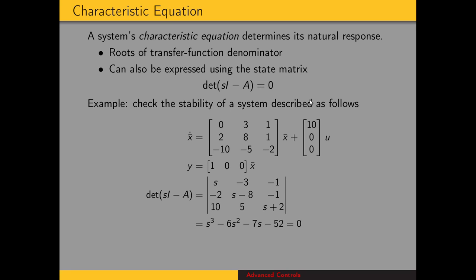For example, let's use this to check the stability of a system with this state space representation. Using the state matrix A, we compute the determinant of (sI - A), which gives a third order polynomial. Setting that equal to zero gives the characteristic equation. To check stability, we see if the real parts of the roots are less than zero. The roots are -7.76 and the pair -0.882 ± j2.43. Since one root is in the right half of the s-plane, the system is unstable.